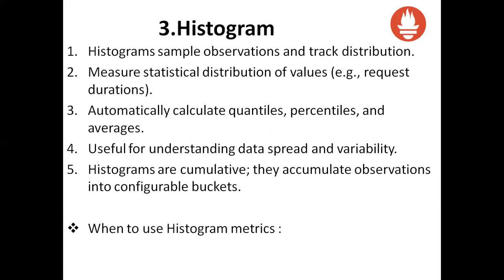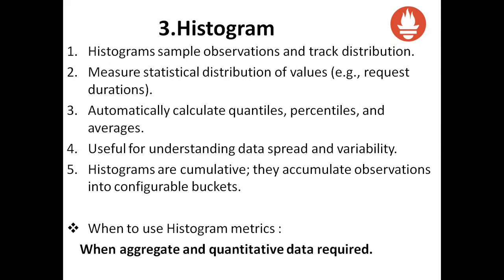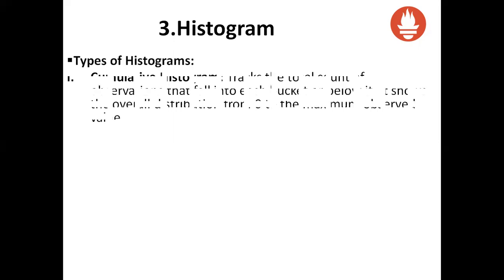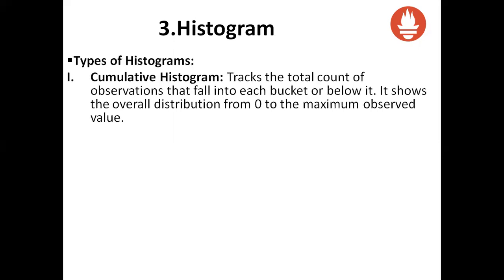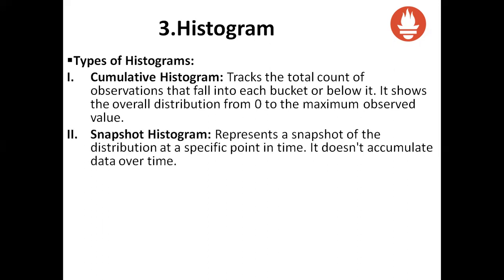When to use histogram metrics: if you want to calculate aggregates or if you have quantitative data, you go with the histogram metric. Types of histograms: cumulative histograms track the total count of observations that fall into each bucket or below it, showing the overall distribution from zero to the maximum observed value. Snapshot histograms represent a snapshot of the distribution at a specific point in time and don't accumulate data over time — useful when you need data for a particular point in time.